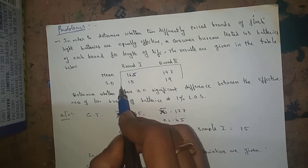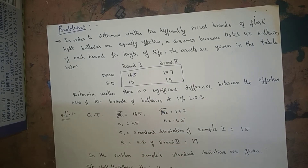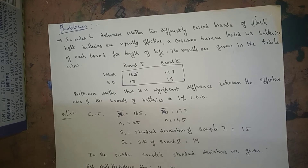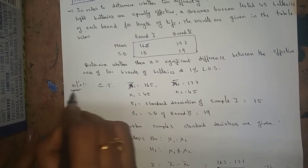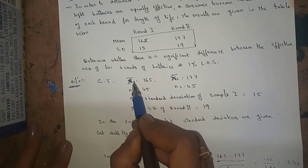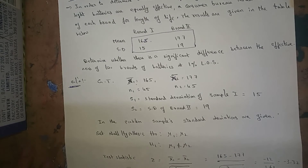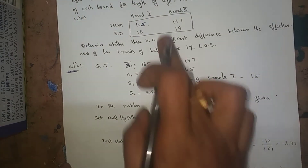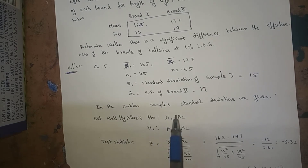Determine whether there is a significant difference between the effectiveness of the two brands of batteries at one percent level of significance. Given: x1 bar = 165, x2 bar = 177, n1 = 45, n2 = 45, s1 = 15, s2 = 19. Since sample standard deviations are given, we use sample variances.